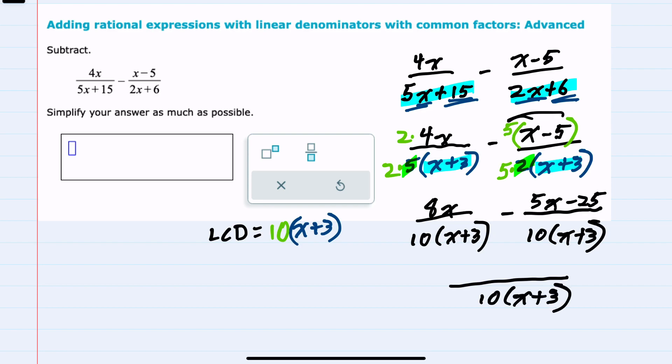Looking across the numerators I have 8x, and we have to be careful with this subtraction because everything behind here is being subtracted. So we can think of this as being distributed. We are subtracting a 5x, so minus 5x, and we are subtracting a negative 25, so plus 25.